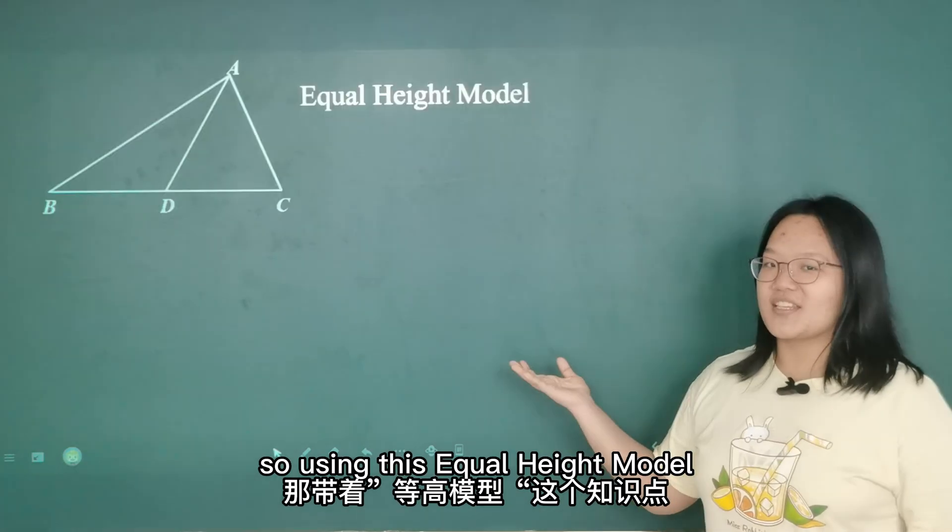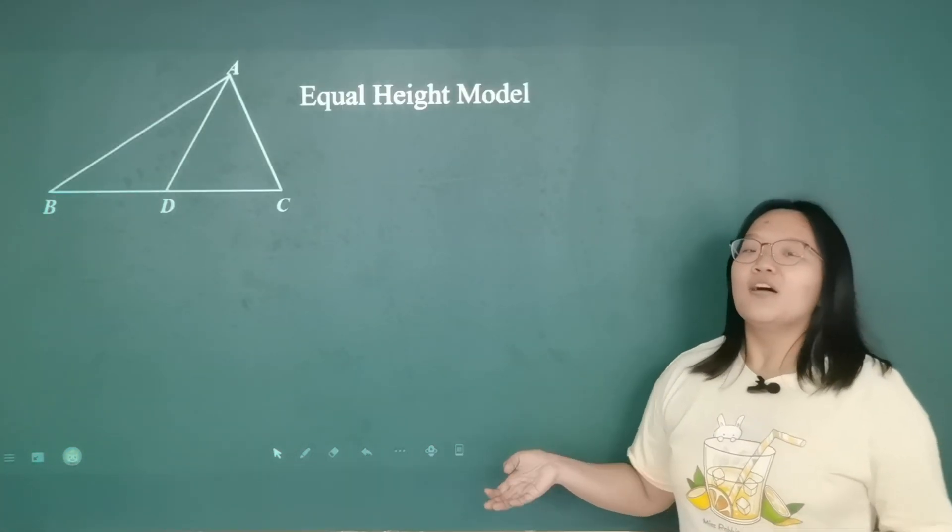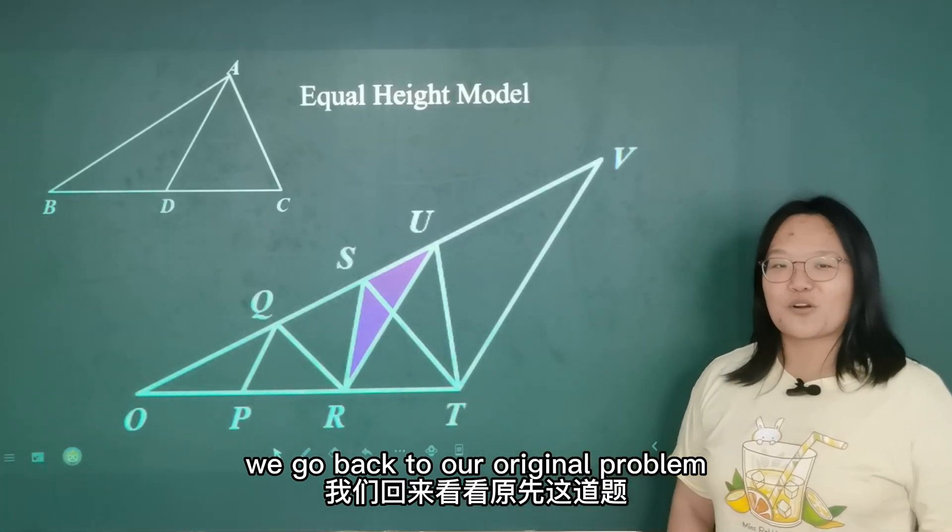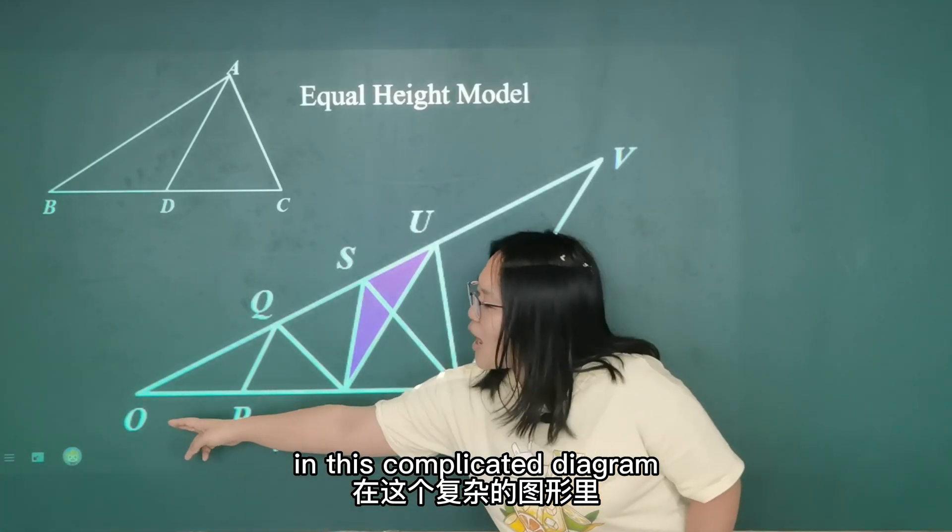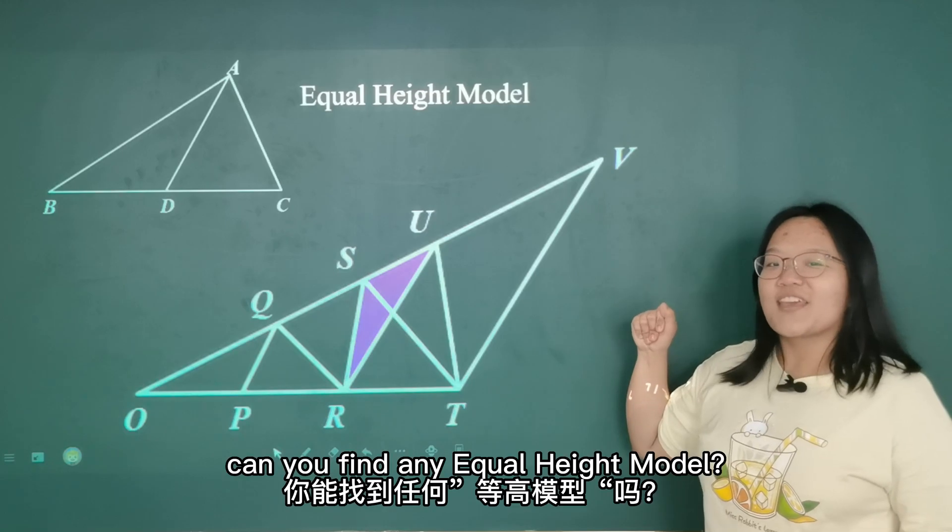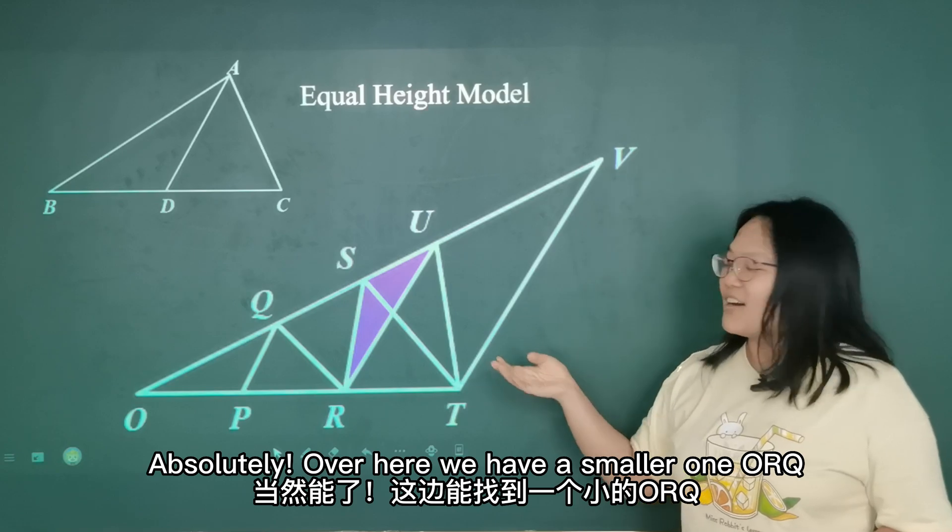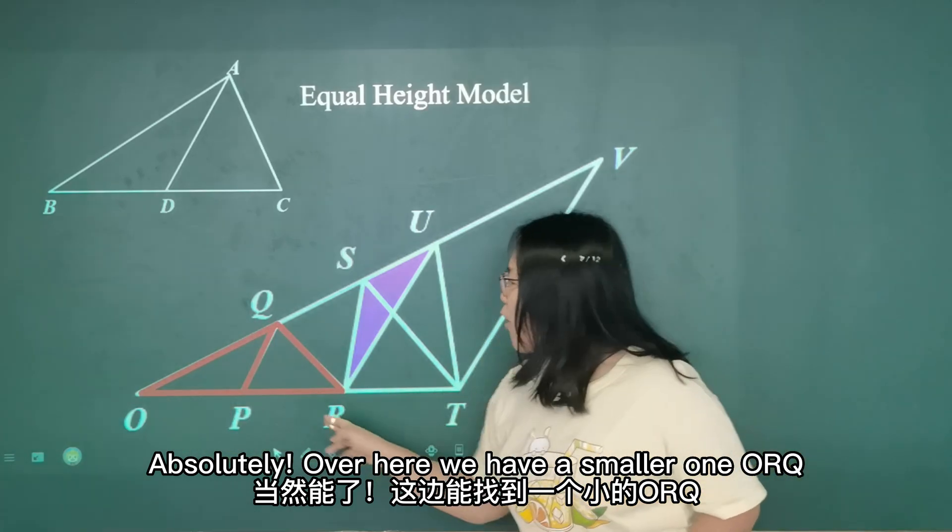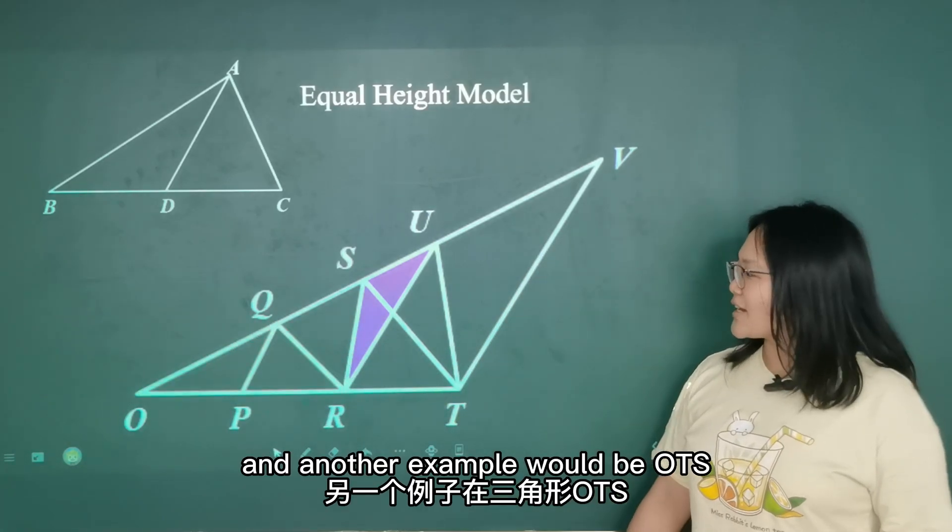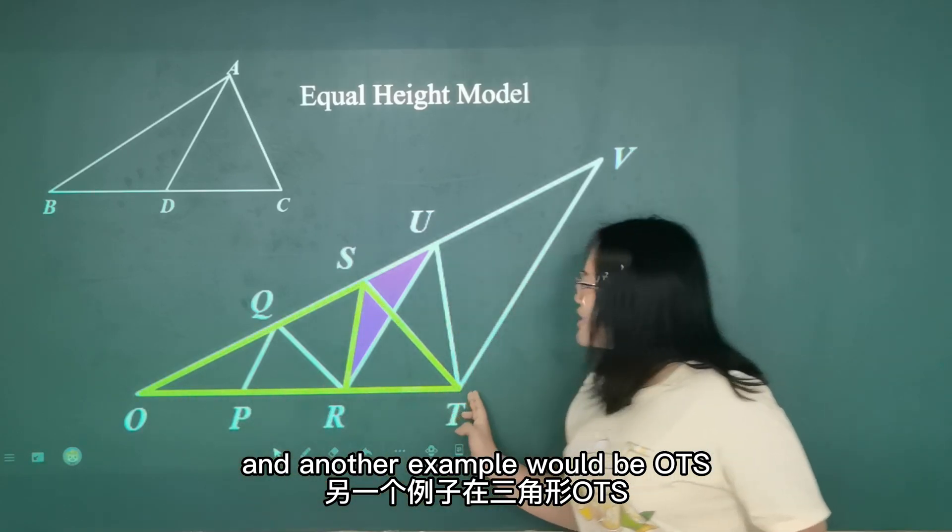So using this equal height model, we go back to our original problem. In this complicated diagram, can you find any equal height model? Absolutely. Over here, we have a smaller one, ORQ. And another example would be OTS.